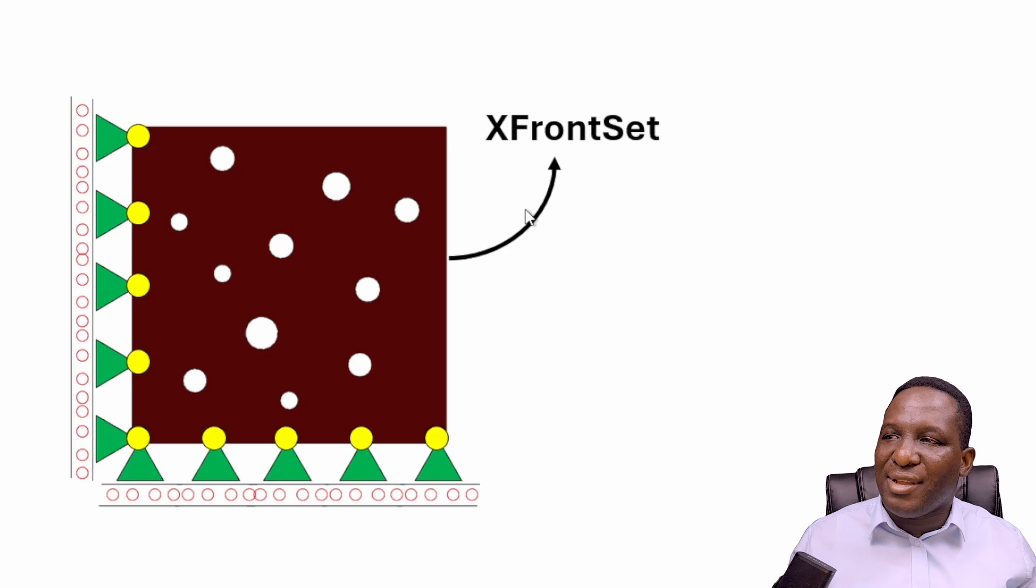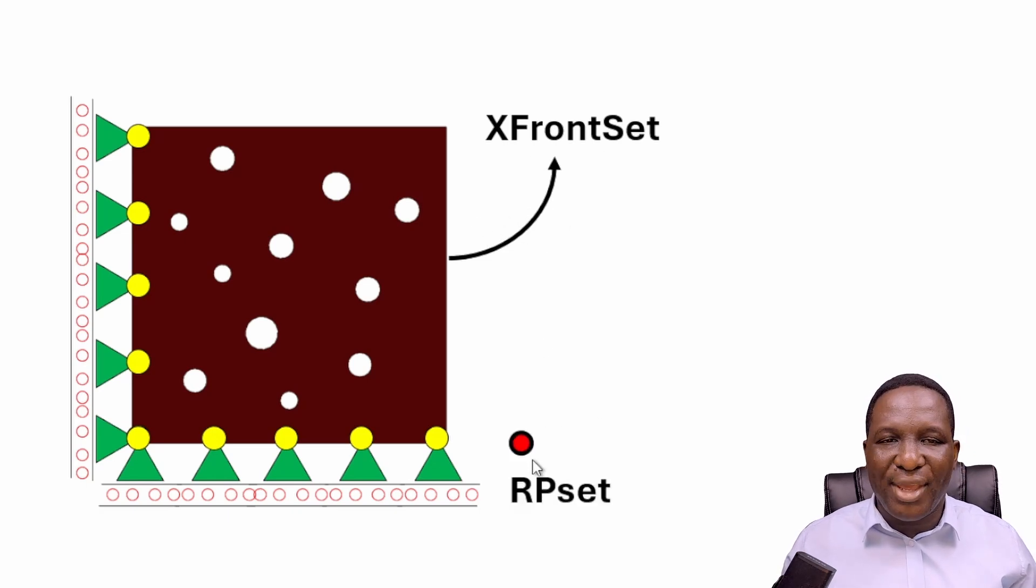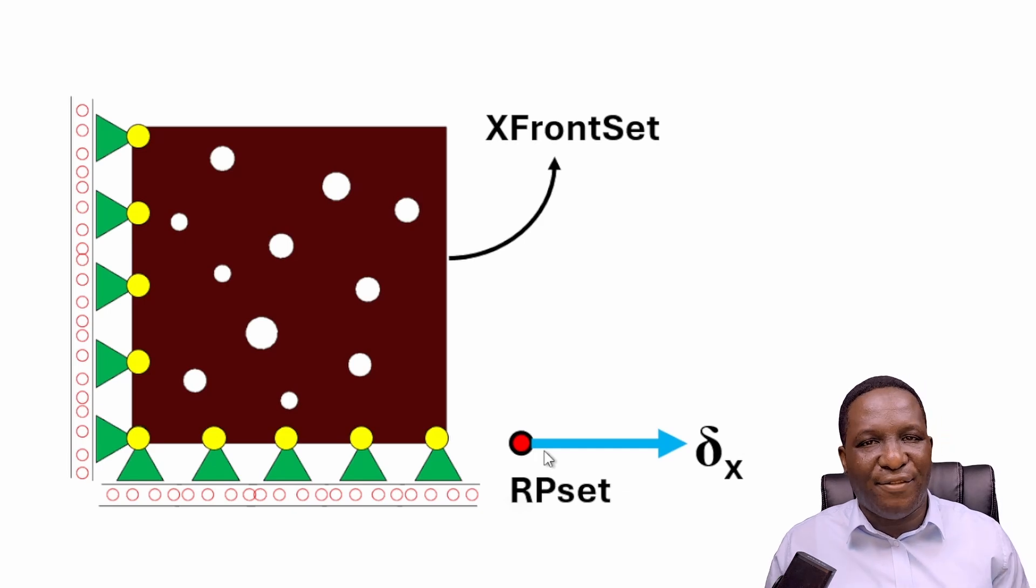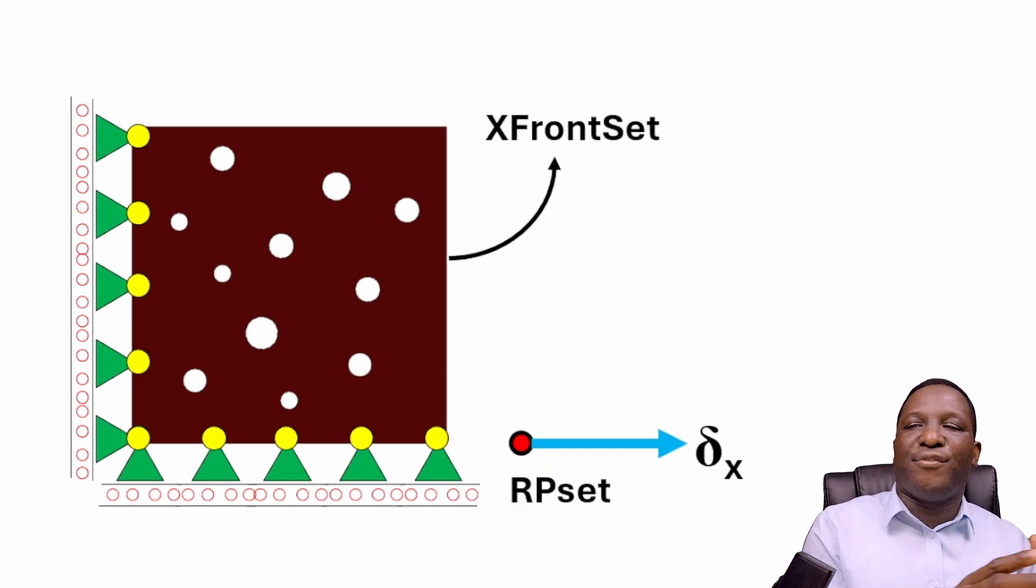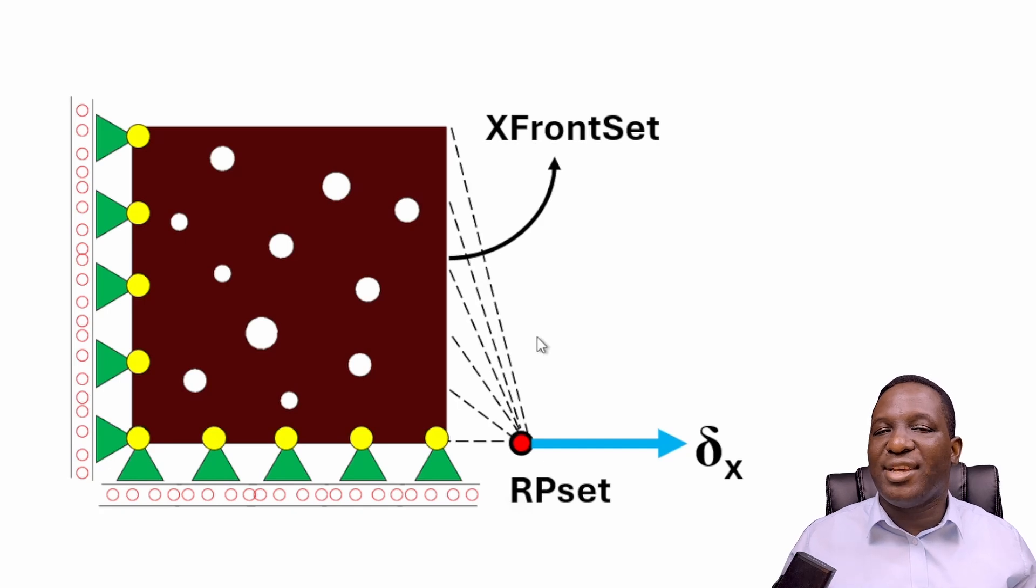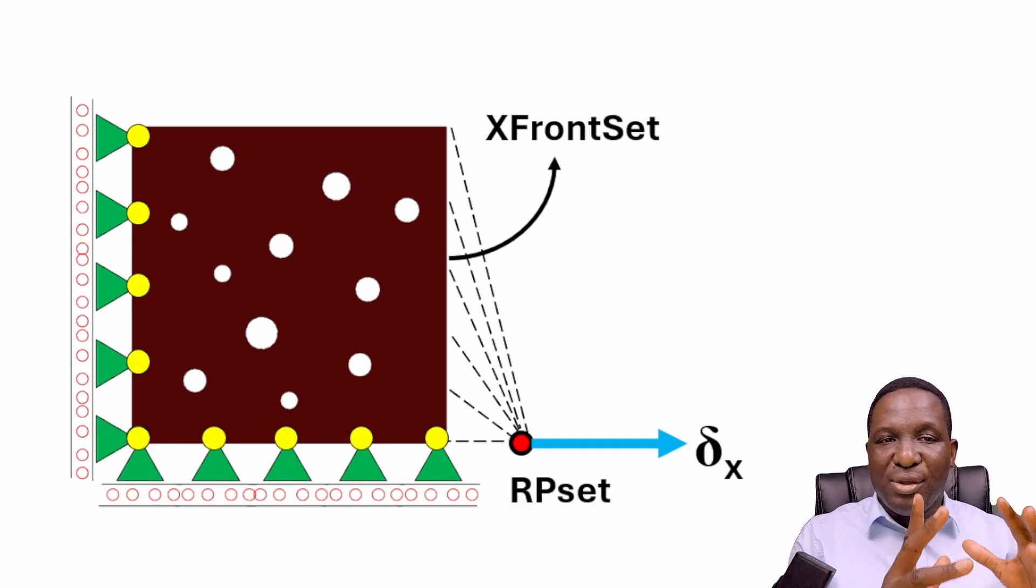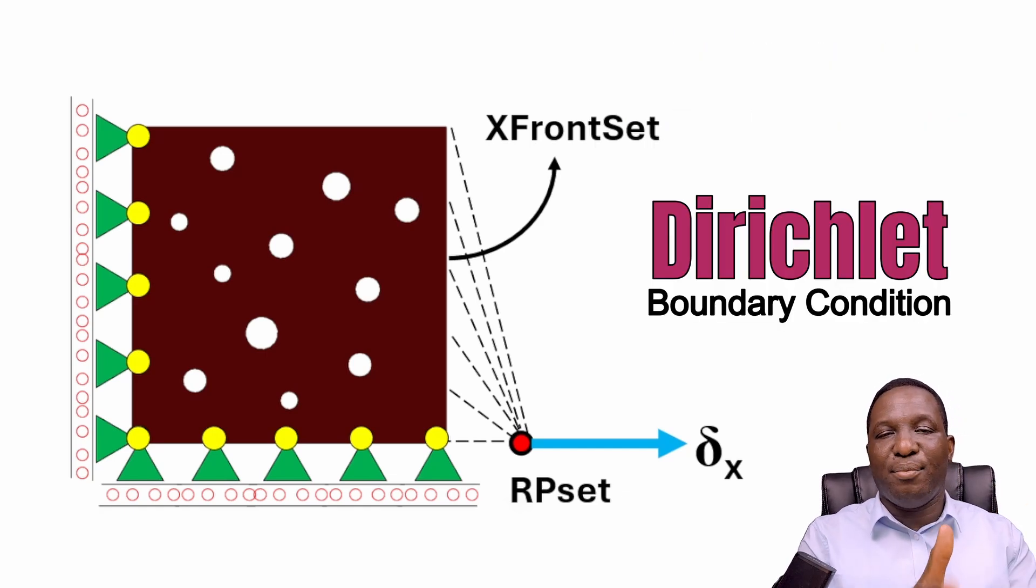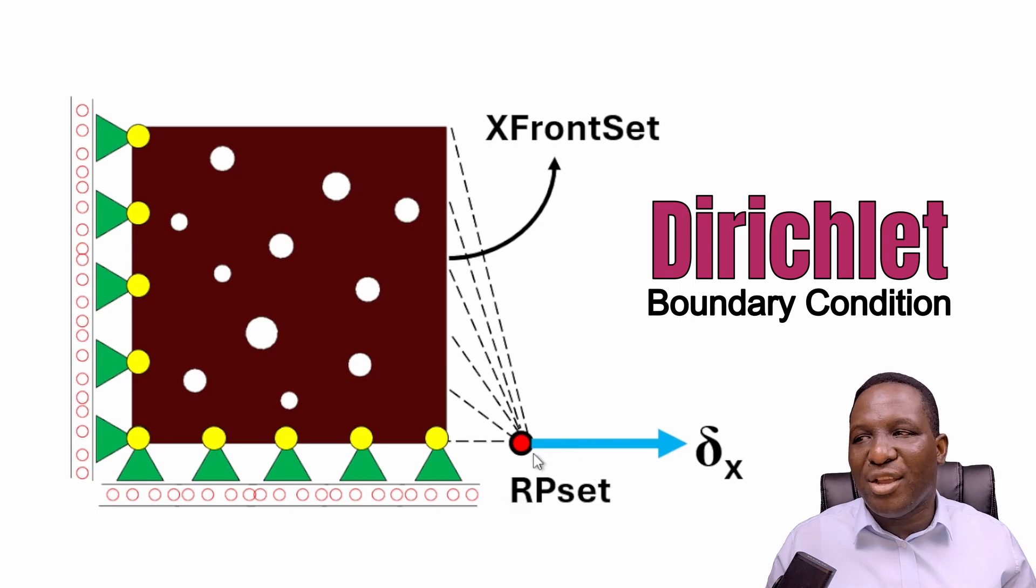We identify the front set of this material, locate a reference point, and apply our load directly on that reference point. Because this reference point is away from the sample, we make a connection between the reference point and the surface of interest using a kinematic constraint. This is what I'm representing in this instance as a Dirichlet-style boundary condition where you're not applying directly onto the sample but away from the sample, using kinematic constraints to make that link.